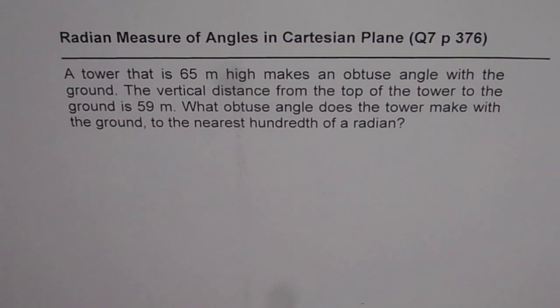A tower that is 65 meter high makes an obtuse angle with the ground. The vertical distance from the top of the tower to the ground is 59 meters. What obtuse angle does the tower make with the ground to the nearest hundredth of a radian?